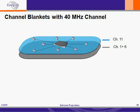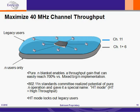Now, there's a very big bonus here. Because each channel blanket is a separate SSID, the wireless LAN can be set up so that legacy users are allowed to connect only to the blue blanket. The gray blanket — which is our 40 MHz blanket — effectively becomes a pure N blanket. That enables a throughput gain that could easily reach 700% over what would happen if legacy users were allowed to access the N blanket. The 802.11n Standards Committee gave a special name to a pure N blanket: HT Mode, which stands for High Throughput. HT Mode locks out legacy users from accessing the 802.11n BSS ID.